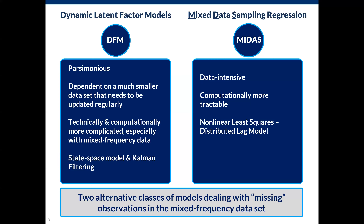Suppose we have only monthly and quarterly data in our sample. Stack each variable's data into a column of monthly observations, so that quarterly variables like GDP have missing observations — the first two months of each quarter are blank. If all data are available, estimation uses Kalman filtering in the state space formulation for DFMs. But complications arise when, as in our case, some observations are periodically missing. DFM and MIDAS deal with this problem in two different fashions.